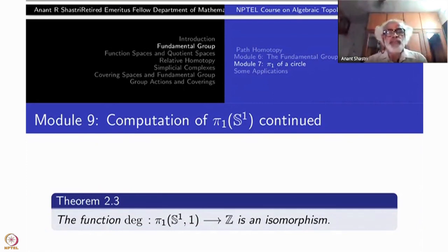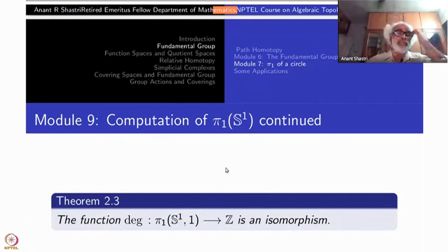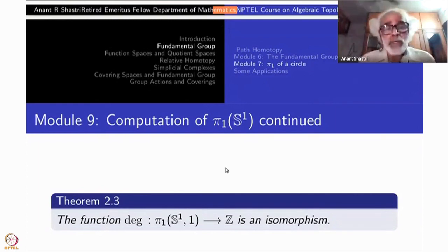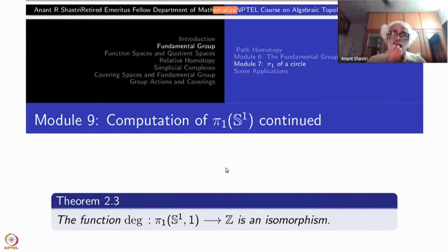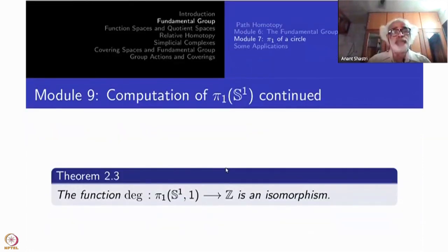This function we want to show is a homomorphism. So this theorem is: the function degree from π₁(S¹) to ℤ is an isomorphism — one-to-one, onto, and a homomorphism. Let us prove them one by one.